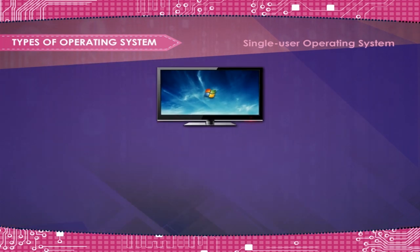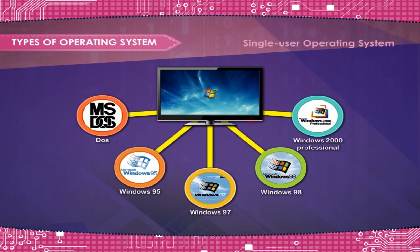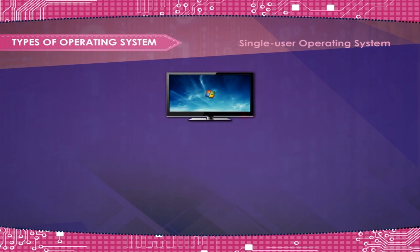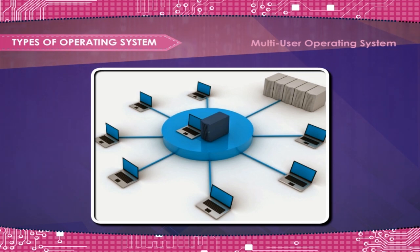Examples of Single User OS: DOS, Windows 95, 97, 98, and Windows 2000 Professional. Multi User Operating System: A Multi User Operating System has been designed for more than one user to access the computer at the same or different time.